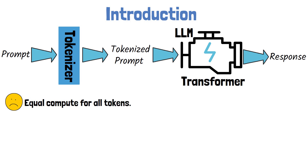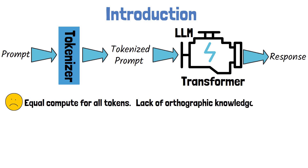However, some tokens are much harder to predict than others. For example, the first token in a sentence would be harder to predict compared to the ending of most words. Additionally, it leads to more shortcomings such as a lack of orthographic knowledge, which is the understanding of the spelling system and its patterns.